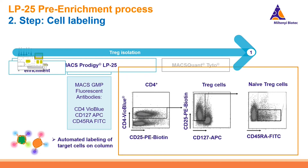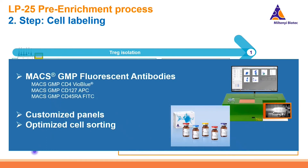Here is an example of this automated labeling. We offer a predetermined panel for this process based on MaxGMP fluorescent antibodies, but it is also possible to get customized panels and to optimize the cell sorting according to your needs. For this, just get in contact with our experts.